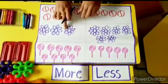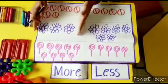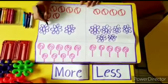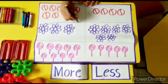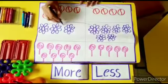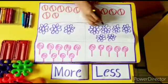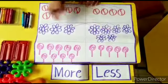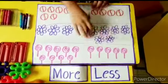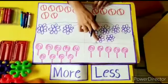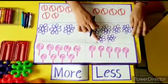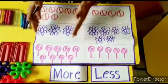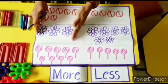Now let's move to the next set of objects. We have here two sets of flowers. Let us compare — one flower from this group to one flower of the other group. One to one, if we pair them.